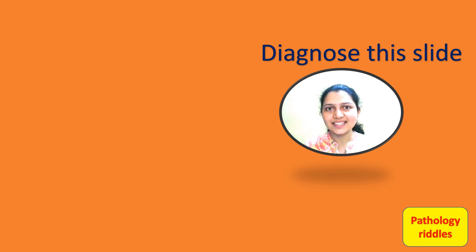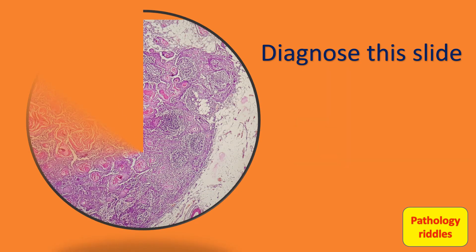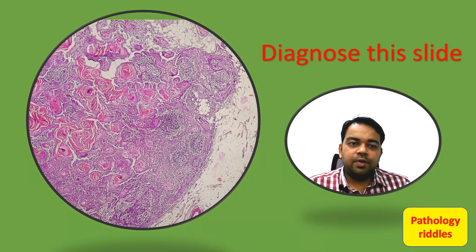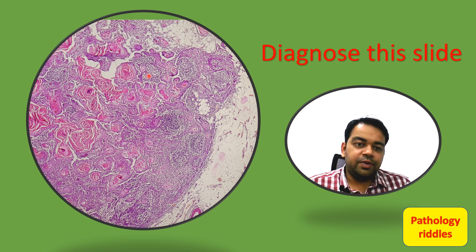The first question is: diagnose this image. This is a slide of metastatic squamous cell carcinoma. You can see the squamous cell carcinoma in this area of the slide, and here towards the periphery you can see all the lymphoid follicles along with the capsule. So this is actually a lymph node which has been infiltrated by squamous cell carcinoma.